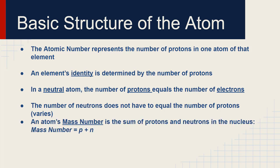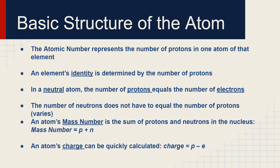An atom's mass number is the sum of the protons and the neutrons in the nucleus — it's the total number of particles in the nucleus, so protons plus neutrons equals the mass number. An atom's charge: remember, neutral means the same number of positives as negatives, no charge. If they're not the same, the charge on the atom — which is called an ion — is found by taking the number of protons and subtracting the number of electrons. If there are more protons than electrons it'll be positive, and vice versa.